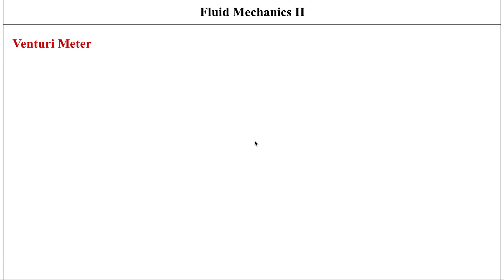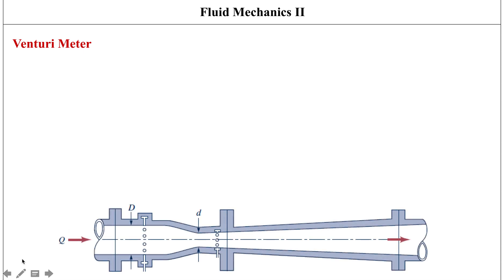Continuing from the previous video, we'll talk about the third type of obstruction-type flow meter — the venturi meter. The operating principle for this device is exactly the same as for the orifice or nozzle meters, but the geometry of venturi meters is designed so that the head losses are reduced as much as possible.